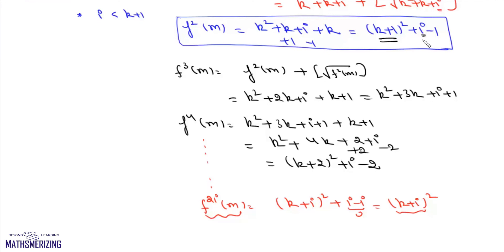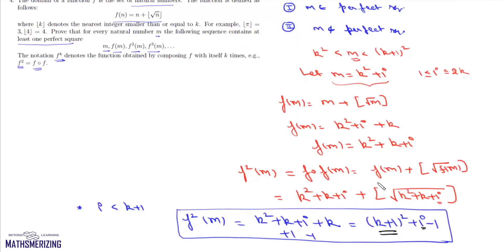So if i = 1, then f²(m) is a perfect square; if i = 2, then f⁴(m) is a perfect square; and in general f^(2i)(m) is a perfect square. The same analysis applies when i ≥ k+1. Therefore, for every natural number m, the sequence m, f(m), f²(m), ... contains at least one perfect square.